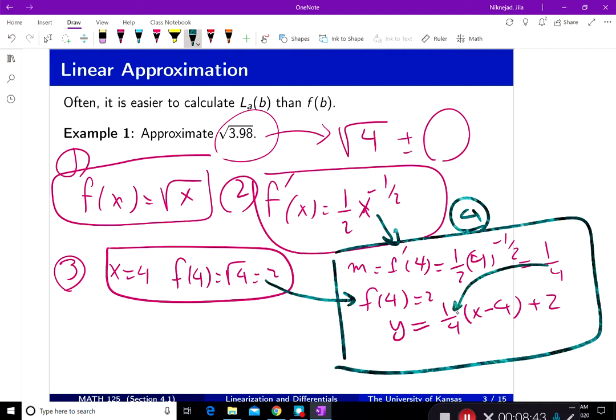And f of 4 using that part. m goes here. 4 is the nice point. 2 is the y value of the nice point. And this becomes my tangent line.